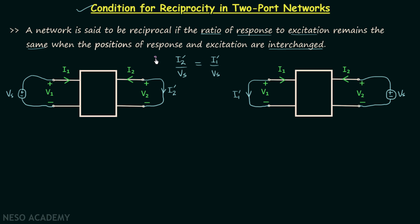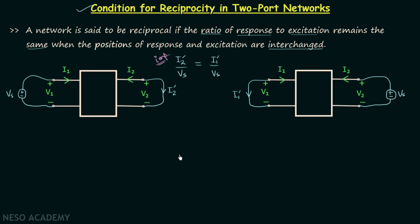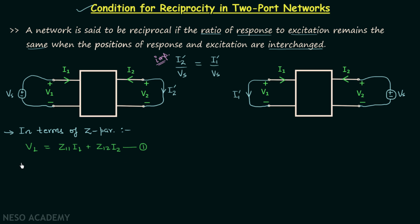This condition is important and I want you to remember it. Now we are going to obtain the condition for reciprocity in terms of Z parameters. We know the two equations in case of Z parameters: equation number one is V1 equal to Z11 multiplied by I1 plus Z12 multiplied by I2, and equation number two is V2 equal to Z21 multiplied by I1 plus Z22 multiplied by I2.